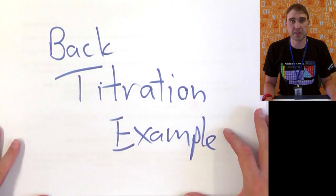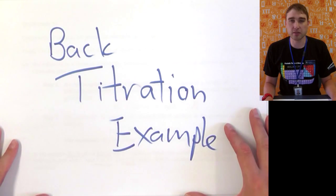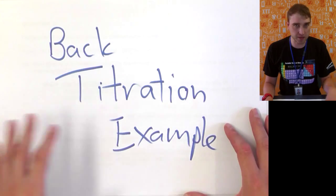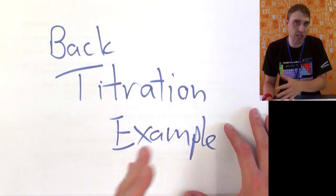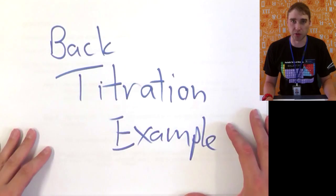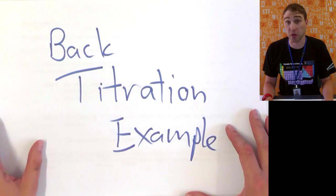Howdy! Today on Flippin' Science we're going to be doing an example back titration question. Sometimes when you want to find the amount of something, you can't find it directly — you have to work it out backwards. So that's what we're going to look at today.